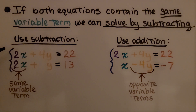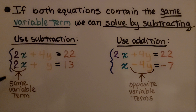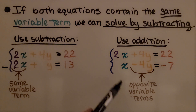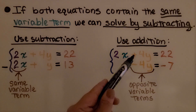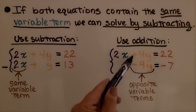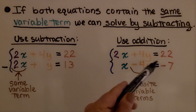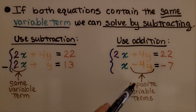If you look at this system, we have 2x and a 2x — they have the same variable term, so we can solve this with subtraction. For this other system, we would use addition because we have opposite variable terms: a plus y and a minus y. Since they're opposites, we would use addition.